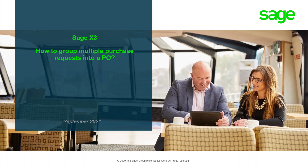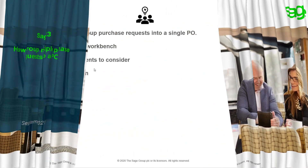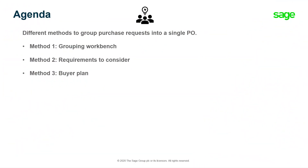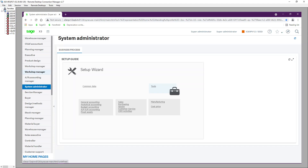Welcome to this Sage X3 tutorial on how to group multiple purchase requests into a purchase order. Today I'm going to discuss three different methods: grouping using the Grouping Workbench, using the Requirements to Consider screen to generate or group purchase requests, and finally using the Buyer Plan. We will discuss all three methods.